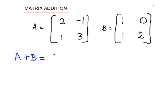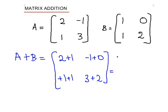To calculate A plus B, we compute each element-wise addition. So we have 2 plus 1, minus 1 plus 0, plus 1 plus 1 (this one here and this one here), and 3 plus 2. And we get 3, minus 1, 2, and 5. So that is the matrix addition of A and B.